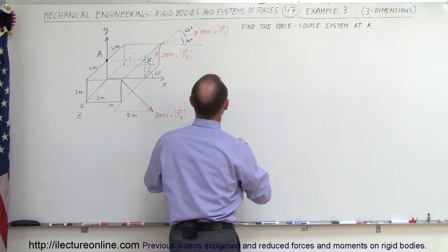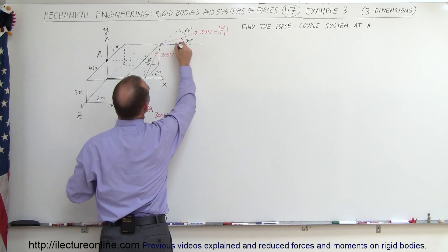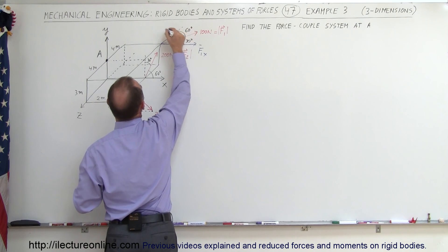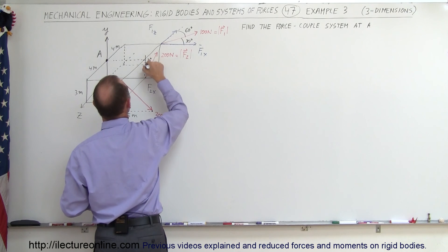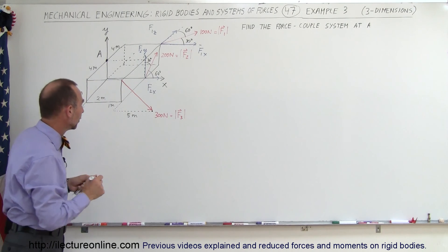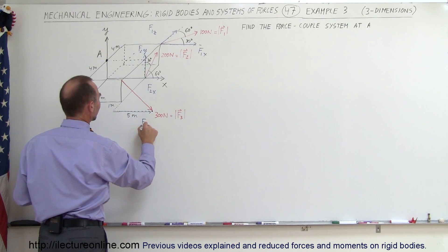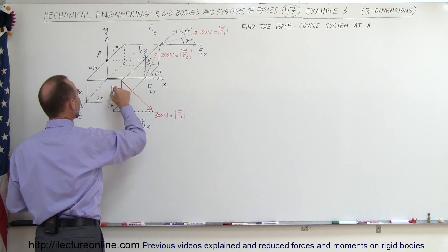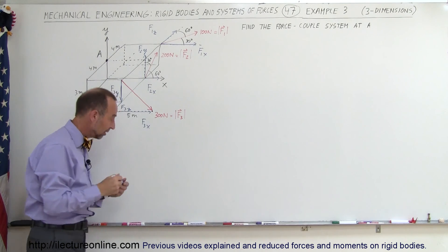Let's start with the easier ones. We're going to get the x component of F1 — that would be F1x — and the z component, that would be F1z. Here we'll have the x component F2x and the y component F2y. For F3, we have the x component F3x, the z component F3z, and the y component F3y. Notice F3y would be negative, F3z is positive, and F3x is also positive.